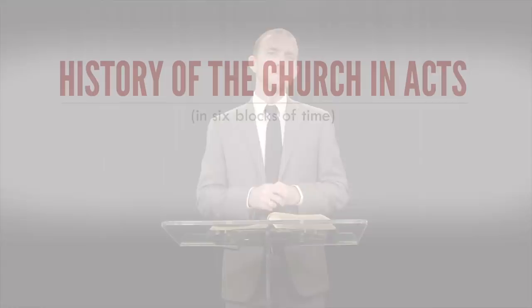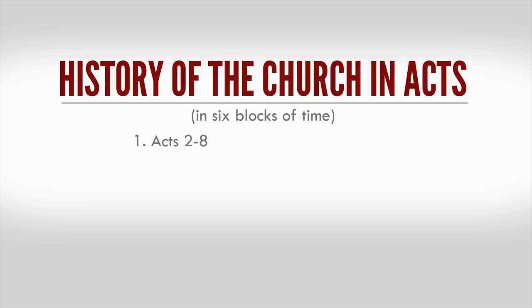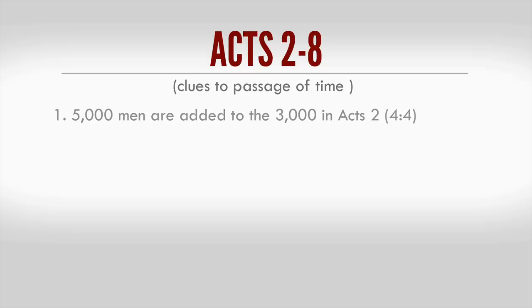The first block of time will cover Acts 2 through Acts 8, the exact length of which is not recorded for us. The church of Christ now having been established and growing, these first fruits of the gospel will remain in Jerusalem for longer than they had planned. There are some clues that indicate passages of time during these chapters. Luke seems to describe that as preaching continued, an additional number of around 5,000 men, Acts 4:4, were added to the 3,000 from chapter 2. Enough time had passed for that many additional souls to be preached to and to respond to the gospel message.